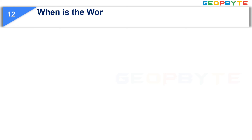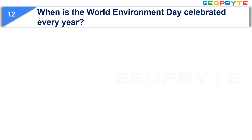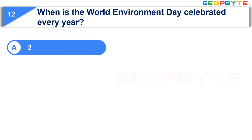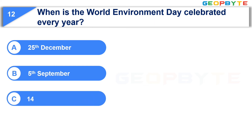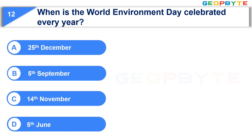When is the World Environment Day celebrated every year? Option A: 25th December. Option B: 5th September. Option C: 14th November. Option D: 5th June. Your time starts now.